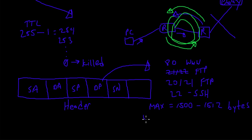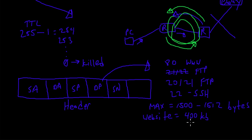An average web page these days could be very large — lots of pictures and videos — so it could be in the neighborhood of 500 kilobytes or 400,000 bytes. We obviously can't fit an entire website into the data portion of one packet, so we need to chop it up. Think of it like mailing a big encyclopedia using letters.